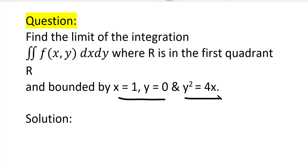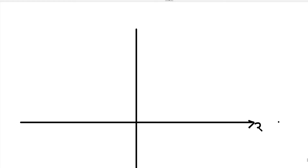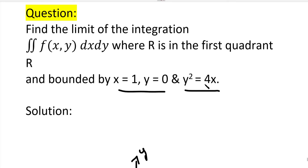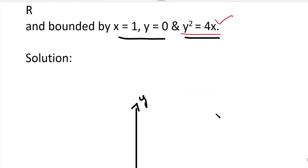Then from the closed region, we'll find the limits for x and y. This is the x-axis and this is the y-axis. From the given equations, we'll first draw the curve y² = 4x. This is a parabola equation. The x values are positive, so the curve opens to the right along the positive x-axis direction.